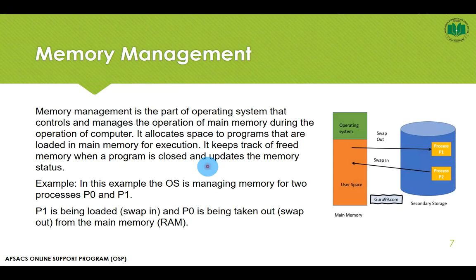The next most important function is memory management. Every computer has only a limited amount of RAM. For example, a laptop will normally have up to 8GB of RAM. Computer processing is demanding very large amounts of memory. In the past, a movie or song had only a few MBs of size. But now movies have quality of HD, Blu-ray, and HQ, which require more amount of RAM to process.